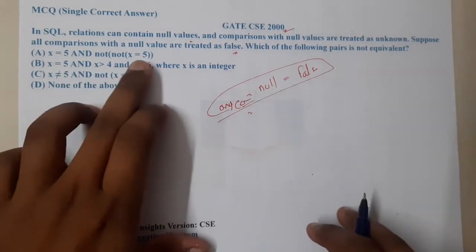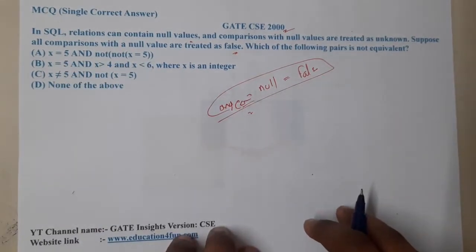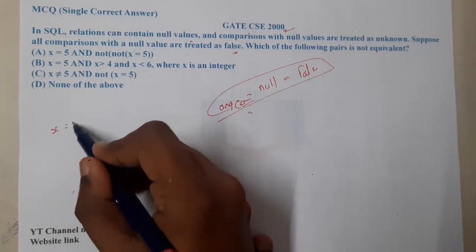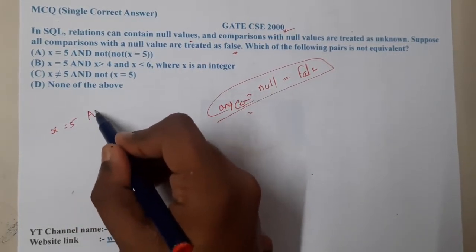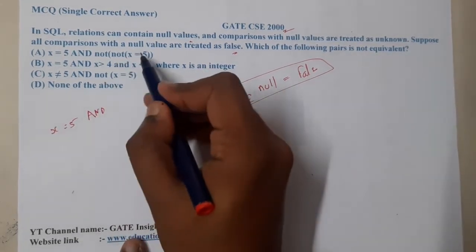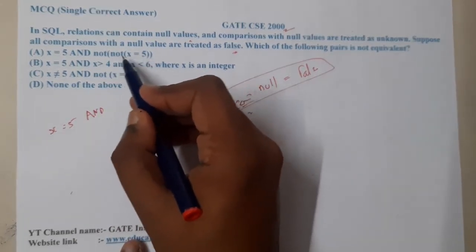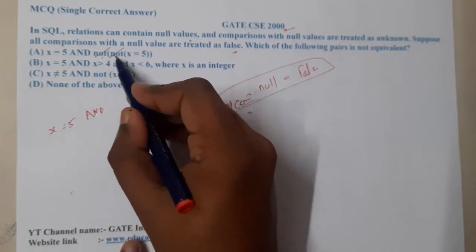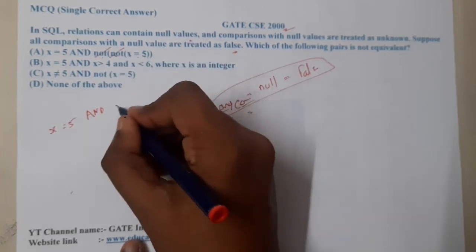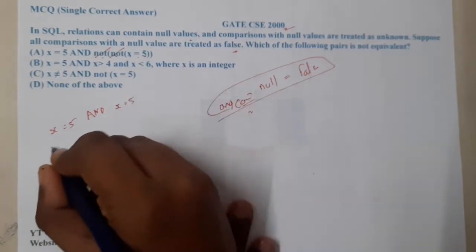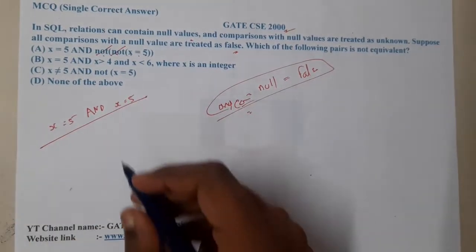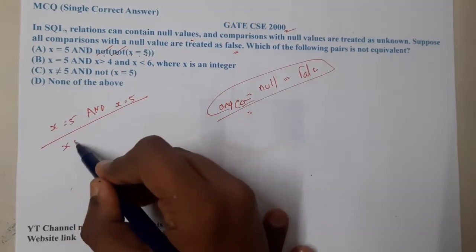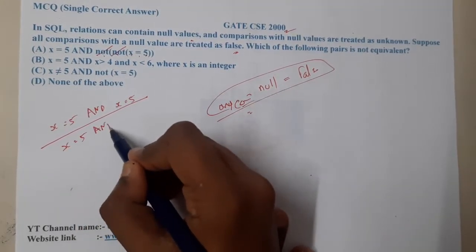Option A says x equal to 5, and NOT NOT x equal to 5. If you observe carefully, x equal to 5 and NOT NOT x equal to 5 — applying NOT two times cancels out, so NOT NOT x equal to 5 is indirectly x equal to 5. So both expressions in option A are the same.